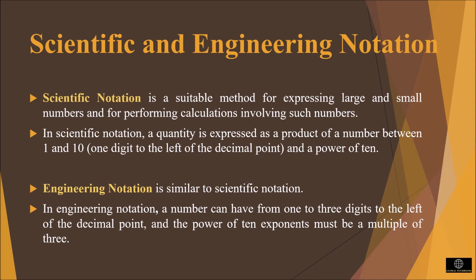Engineering notation is similar to scientific notation and is commonly used in technical fields to express large and small quantities. In engineering notation, a number can have from 1 to 3 digits to the left of the decimal point, and the power of 10 exponent must be a multiple of 3.